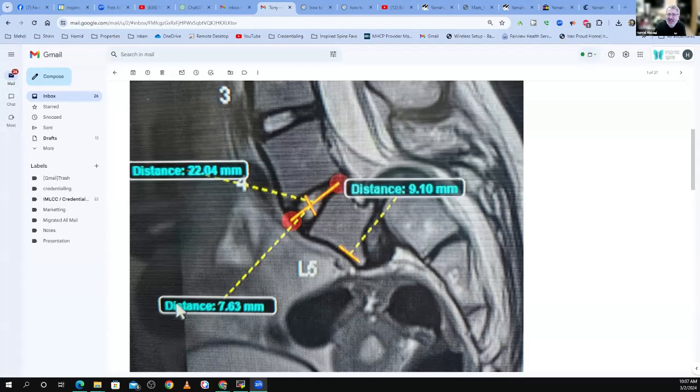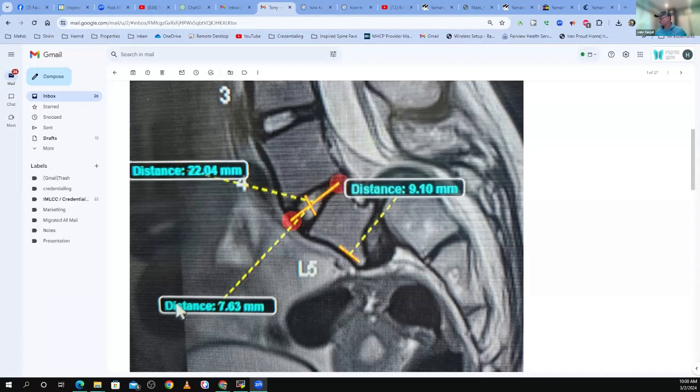So here, that's quite significant spondylolisthesis there. This is at least a grade three. Aren't you surprised that this patient just has back pain and leg pain, but no weakness? No truly severe neurologic deficit?